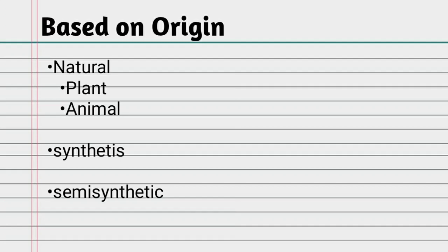Polymers are classified into 6 types. Let us see the first type — based on origin. Polymers are classified into 3 types on the basis of origin.